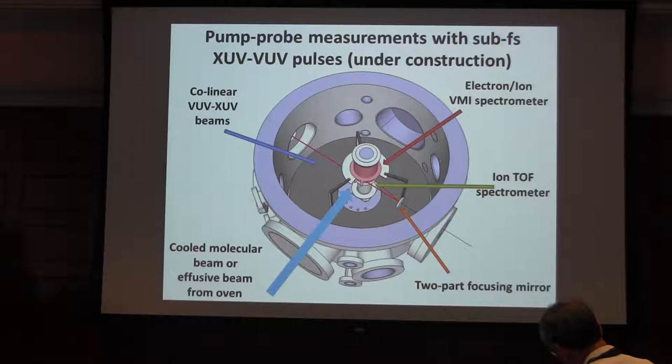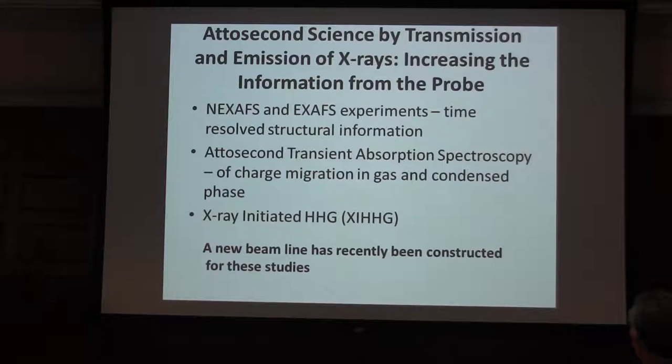We're introducing into the chamber where up to now we've been doing streaking, an ion TOF back-to-back with an electron VMI for the first experiments that we're about to try. I'm not going to tell you more about those planned experiments because that will be giving too much away and we aren't actually there yet. But let me tell you instead about something else we're doing, which is asking the question: how do we increase the amount of information we can get from the probe step?